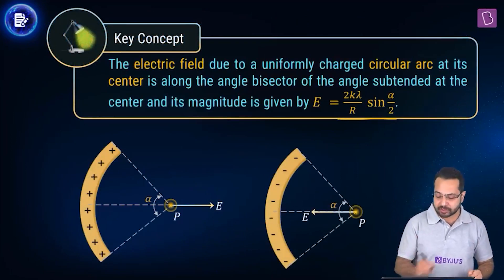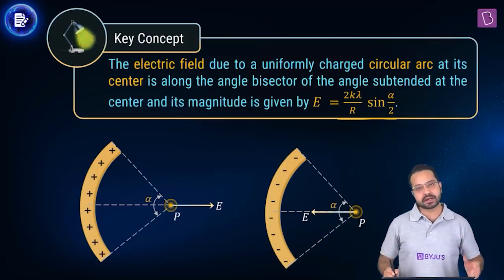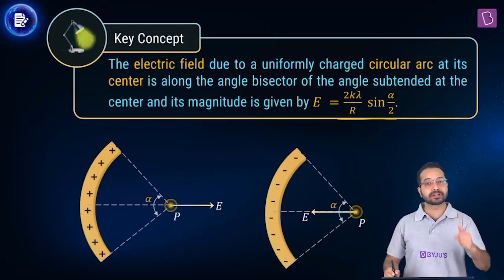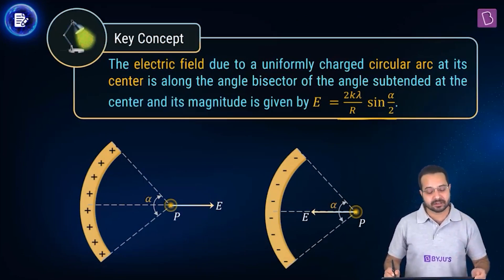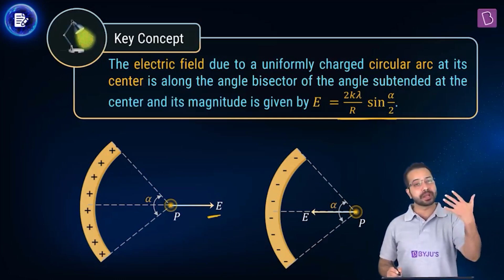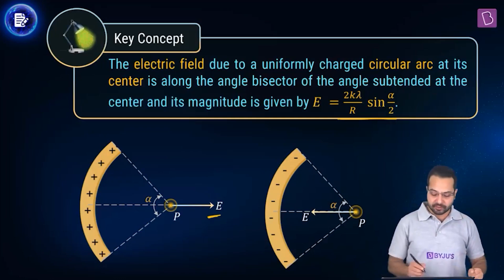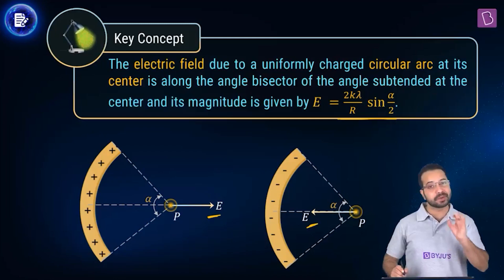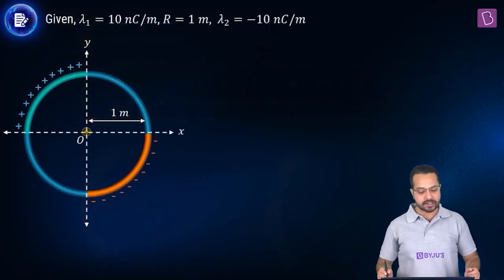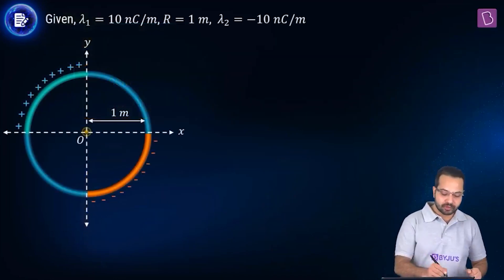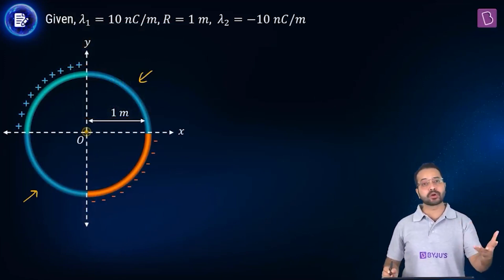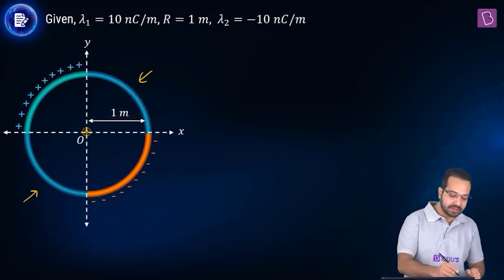The key concept is the same: magnitude is 2kλ/R · sin(α/2), direction is along the angle bisector — away from positive charge, toward negative charge. The neutral first and third quadrants contribute no field.